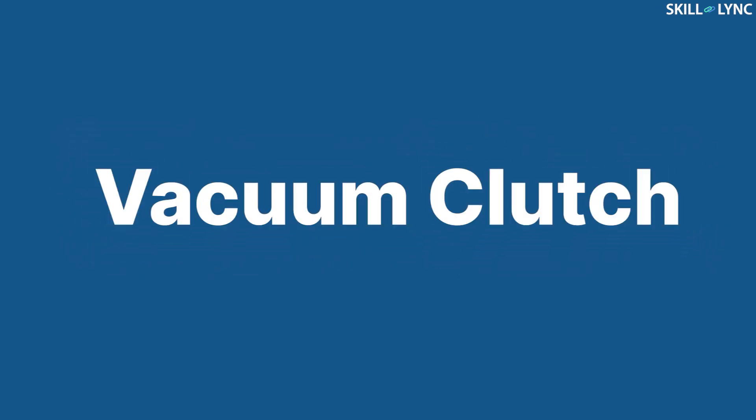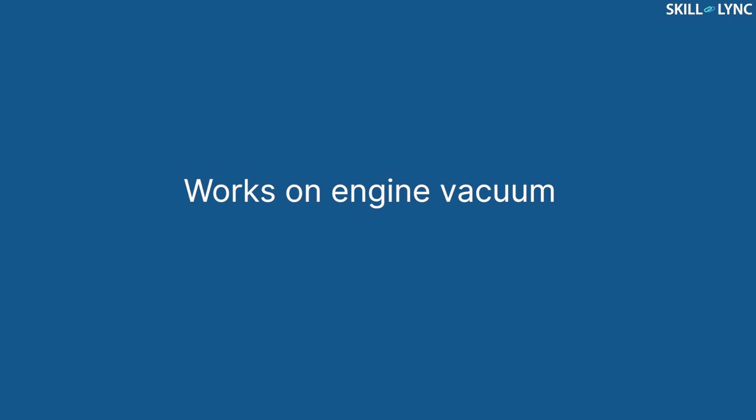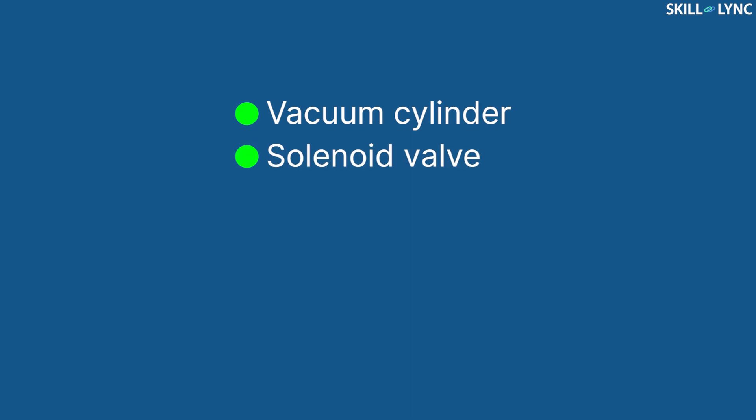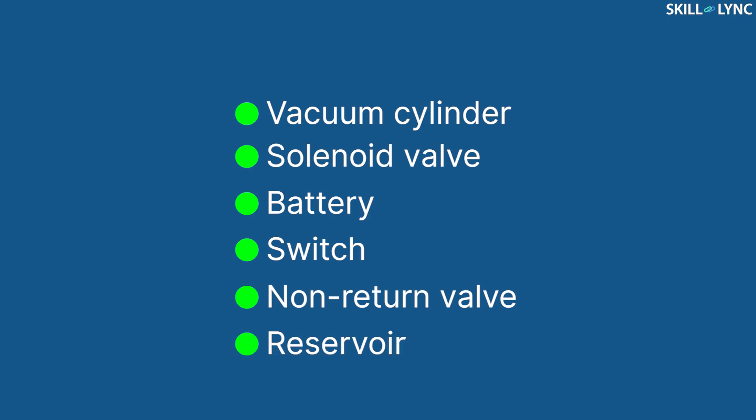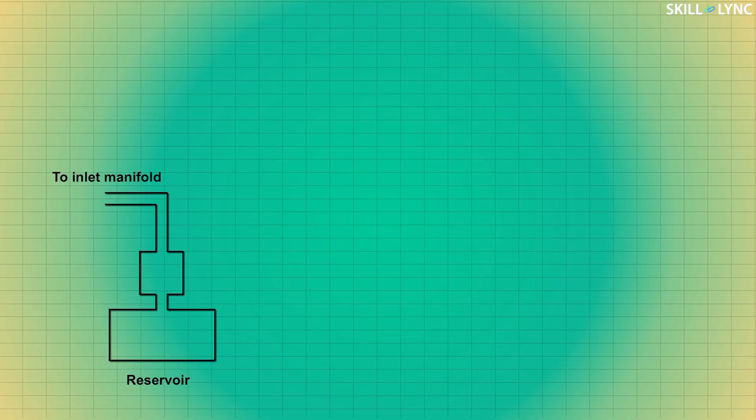Now let's move on to the next type: vacuum clutch. A vacuum clutch is a type of clutch that uses vacuum from the engine manifold for operating the clutch. A vacuum clutch consists of a vacuum cylinder, a solenoid valve, a battery, a switch, a non-return valve, and a reservoir.